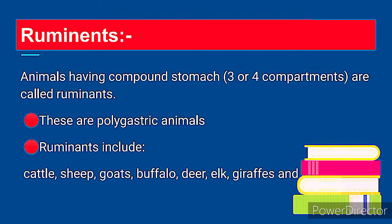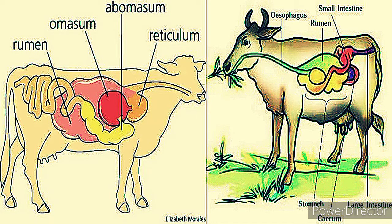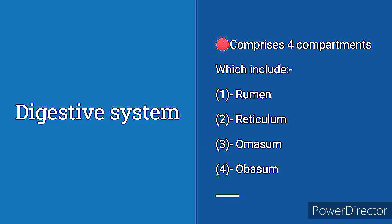Ruminants include cattle, sheep, goat, buffalo, deer, and giraffe, etc. Here you can see the diagrammatic representation of the compound stomach of ruminants. The digestive system of ruminants makes them different from non-ruminants because it comprises four compartments: rumen, reticulum, omasum, and abomasum.